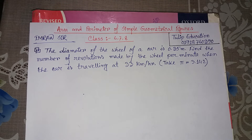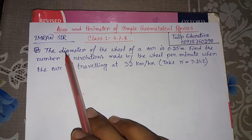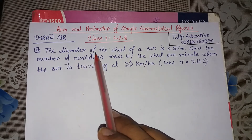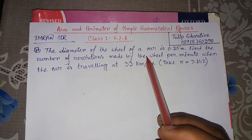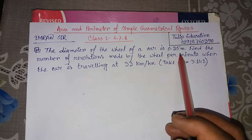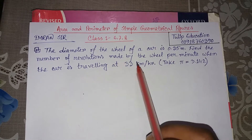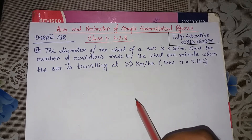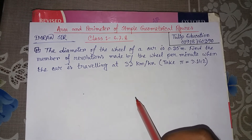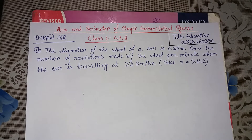Today I am going to show you: the diameter of the wheel of a car is 0.35 meter. Find the number of revolutions made by the wheel per minute when the car is travelling at 33 km per hour.